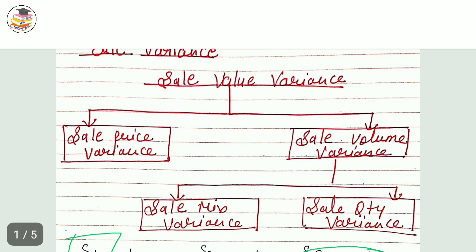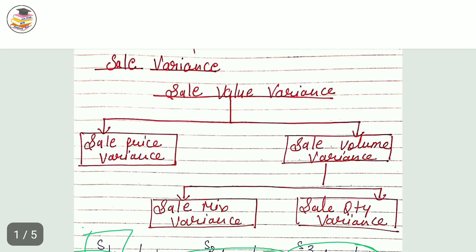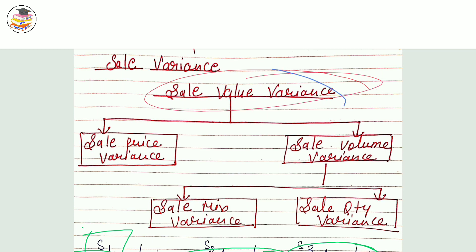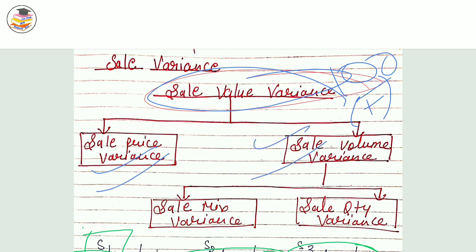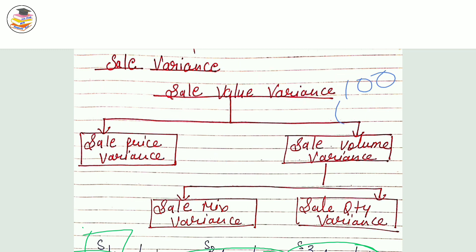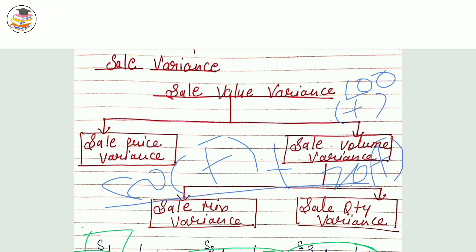Sometimes your answer may not match the textbook answer, but you need to check whether your answer is correct or wrong. Here's how: first calculate the sale value variance — suppose it comes to 100 favorable. Now check: if sale price variance plus sale volume variance also adds up to 100, then your answer is correct. For example, if sale price variance is 80 favorable and sale volume variance is 20 favorable, their sum is 100 favorable.